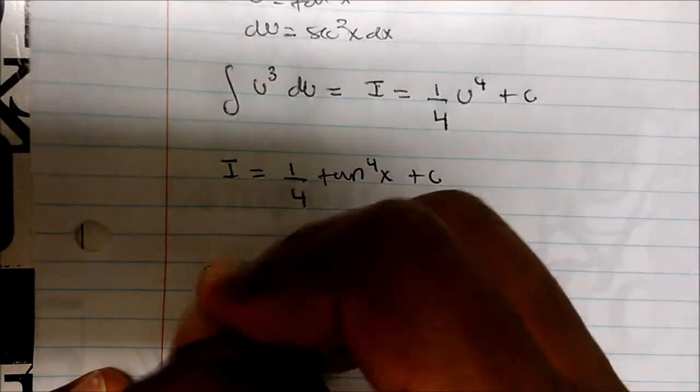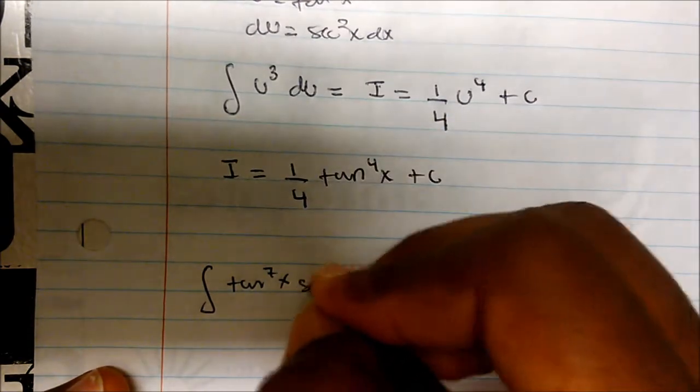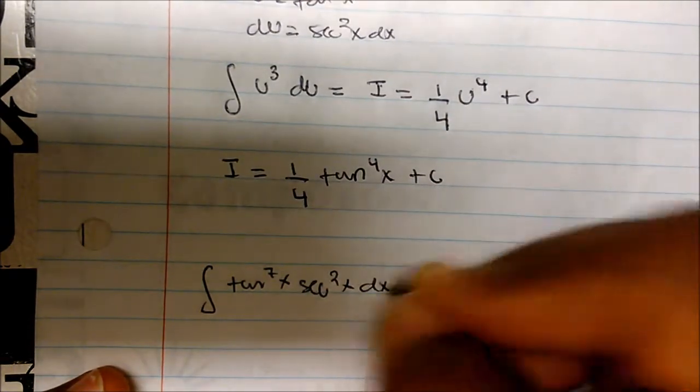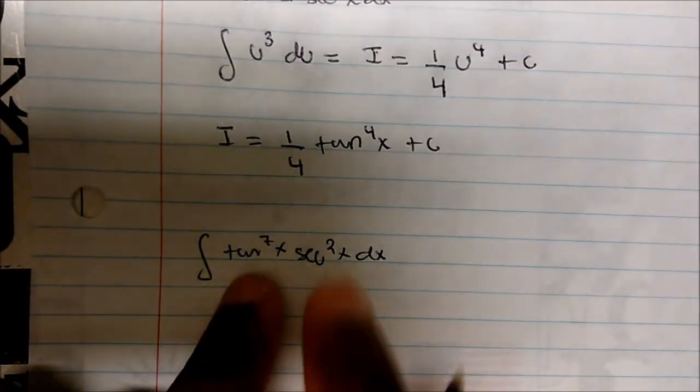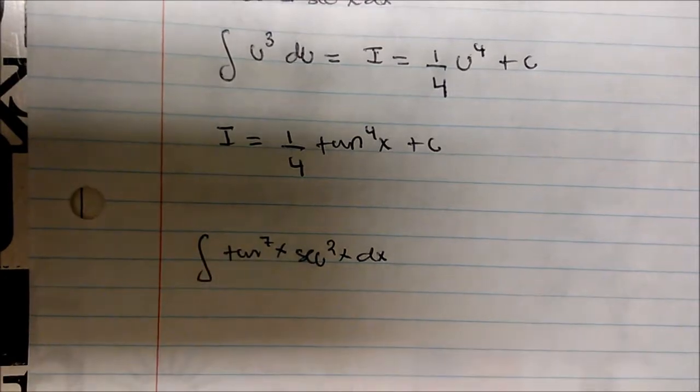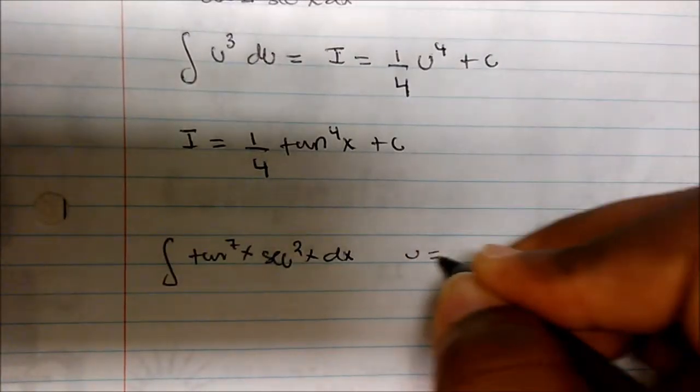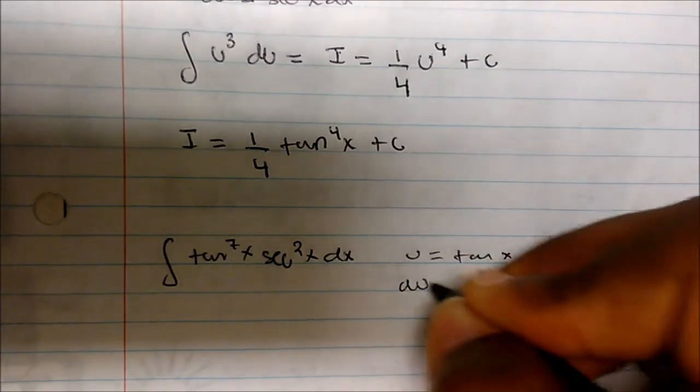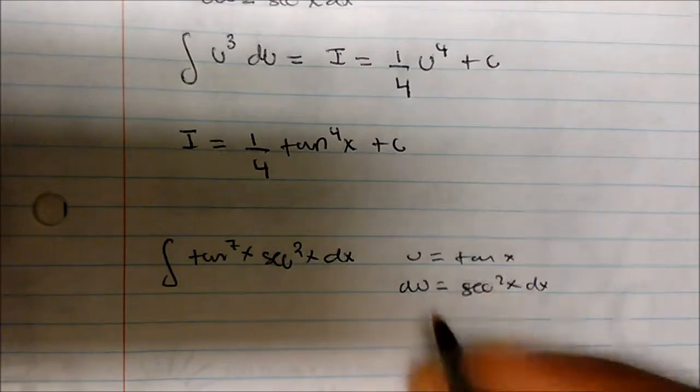And what about this one? What if we want to take the integral of tangent to the 7th of x times secant squared of x dx? Well, to me it looks as if, and you'll see the general pattern. Whenever we have the secant squared of x and we have tangent, always look for a u-substitution. And so in this case if I set my u to be tangent of x, the derivative is actually secant squared of x dx.